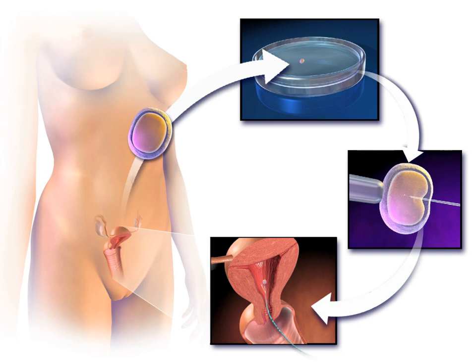Preimplantation genetic diagnosis involves the use of genetic screening mechanisms such as fluorescent in-situ hybridization or comparative genomic hybridization to help identify genetically abnormal embryos and improve healthy outcomes. Embryo splitting can be used for twinning to increase the number of available embryos.